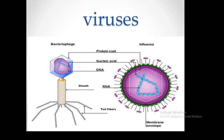Let's start with the structure of viruses. Viruses vary in their individual structure, but all viruses contain two structures. These are the nucleic acid — which is the DNA or the RNA — and then we have a capsid, which is a protein coat. The capsid gives a virus its shape and makes up 95% of the virus.